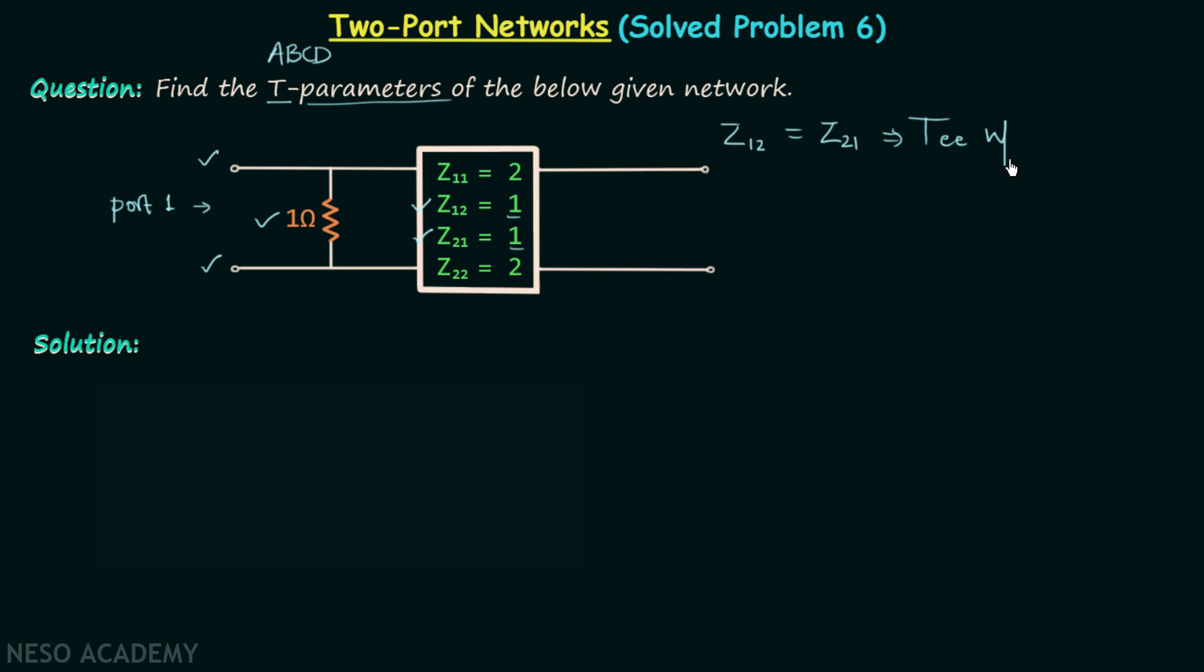This implies these are the Z-parameters of a T network, and therefore in place of this black box we can have a T network like this. So here we have one ohm resistor. This resistor will have the value Z11 minus Z12, so we have 2 minus 1, that is 1 ohm.